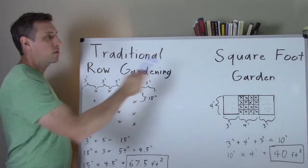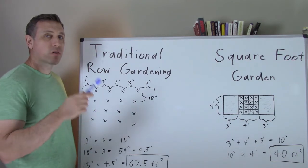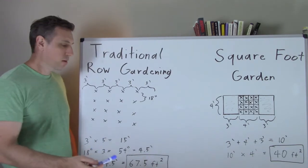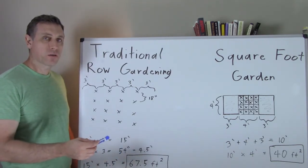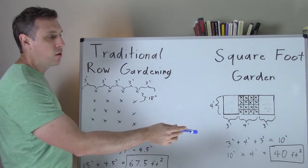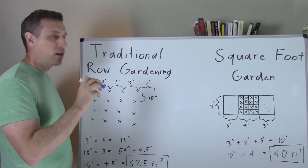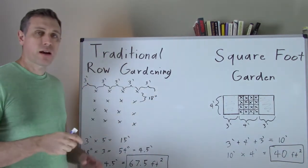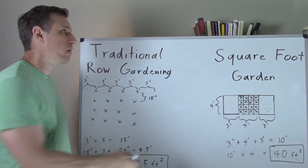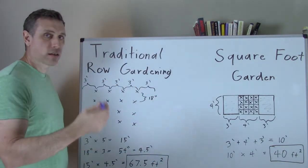So now that we've looked at both types of gardening methods and seeing what they entail, let's take an example. And the example I want to use is growing 16 plants of okra. So if we use the traditional row gardening method, I've already done the math for you, it's going to take 67.5 square feet to grow 16 okra plants. Now if we take the square foot gardening method, do the calculations, it's only going to take 40 square feet to grow those same 16 okra plants. So as you can tell, we're utilizing our land area a lot better in square foot gardening and we're condensing being able to grow more plants in a smaller area in square foot gardening. So that's why I choose square foot gardening over traditional row gardening because it's a lot more efficient in the land use.